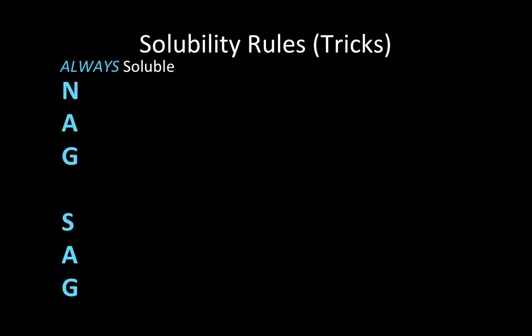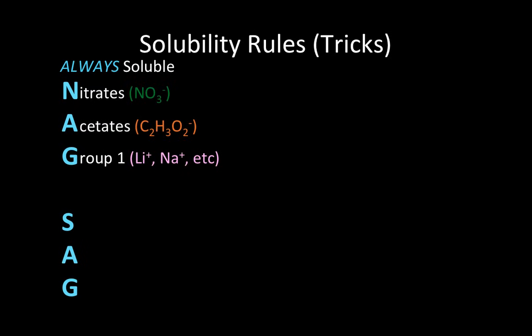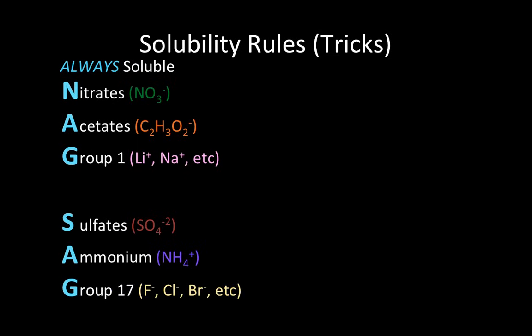The N in NAGSAG stands for nitrates, NO3-. The A for acetates, C2H3O2-. And G for group 1 metals, such as lithium and sodium, and many more. S is for sulfates, SO4²⁻. A is for ammonium, NH4+. And lastly, G for group 17 non-metals, such as fluorine, chlorine, bromine, iodine, and more.